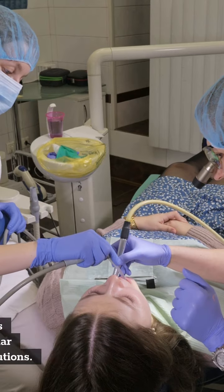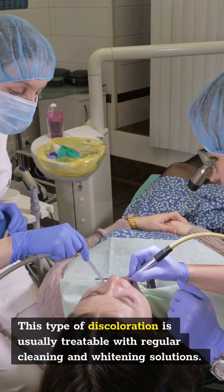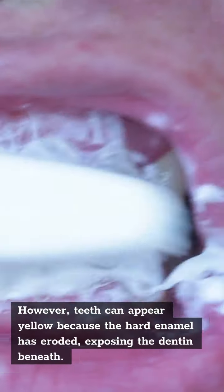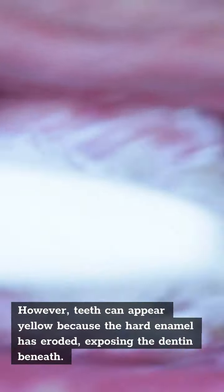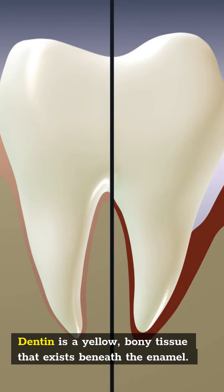This type of discoloration is usually treatable with regular cleaning and whitening solutions. However, teeth can appear yellow because the hard enamel has eroded exposing the dentine beneath. Dentine is a yellow bony tissue that exists beneath the enamel.